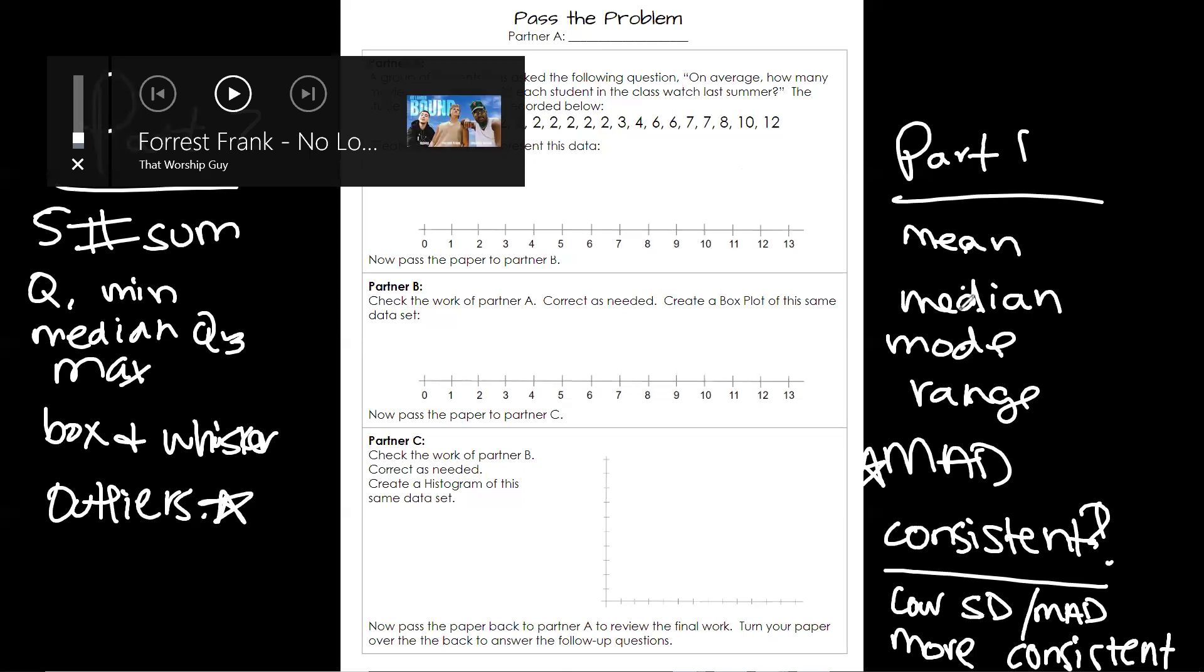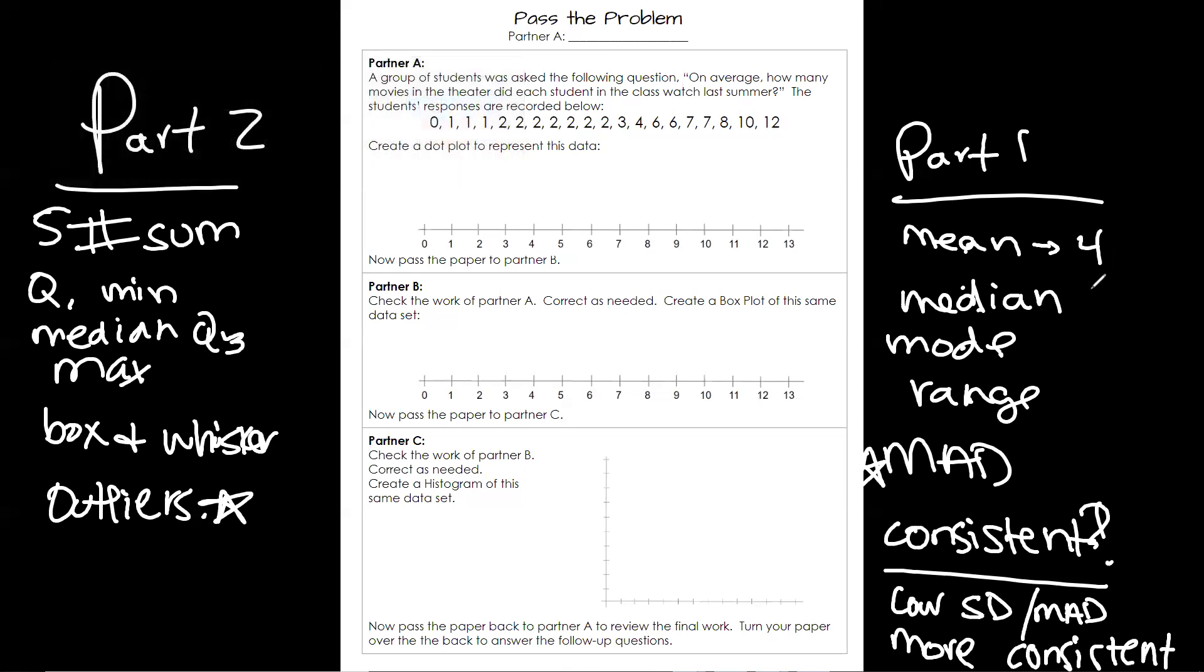Are we okay on mean, median, mode, range? Does anybody need me to go through those? Can you tell me what those were? Mean, or median, mode, range? So mean, you add them all up, divide by how many numbers there are. Median, you find the middle. Mode is most often, and range is highest minus lowest. We're going to come back to MAD.